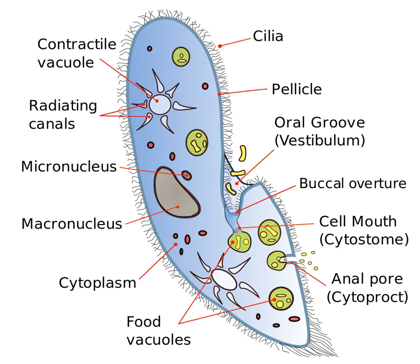Much like the cytostome, a set of microtubules form an association with the cytopharynx. Two sets of microtubules follow the path of the cytopharynx in cells, forming a gutter-like structure that surrounds the cytopharynx. One side of the cytopharynx is not associated with these microtubules and is deemed the naked side. However, vesicles associate with this side of the cytopharynx.